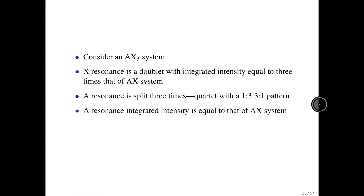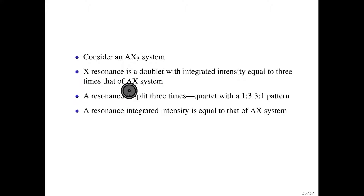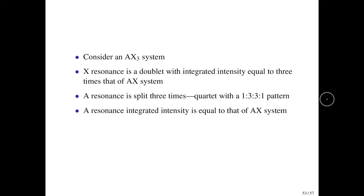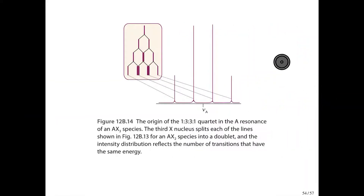In the AX3 system, the X resonance again appears as a doublet, but now with three times the integrated intensity of the AX system. The A resonance is split three times — once by each of the three X nuclei — yielding a quartet with a 1:3:3:1 intensity pattern. The overall intensity of the quartet remains identical to that of the AX system, since there is still only one nucleus A. Here's the diagram showing how splitting occurs once, twice, and a third time to produce that 1:3:3:1 pattern.